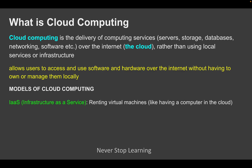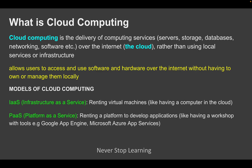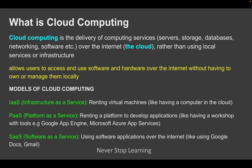One model is Infrastructure as a Service, where we rent infrastructure like virtual machines. Another is Platform as a Service, where we rent a platform to develop applications — like Google App Engine or Microsoft Azure App Services — without maintaining it locally. And then we have Software as a Service, where we just use software applications on the internet like Google Docs and Gmail without managing them locally.